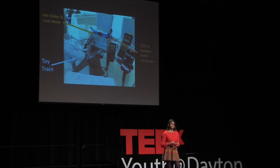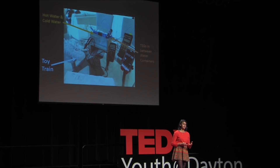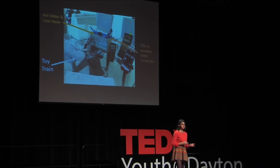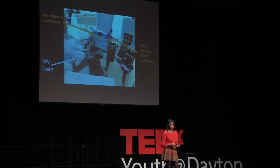I was able to power this train for about 40 minutes. This was a huge step in my process toward my end goal, because it meant I was able to power a train — which originally requires three AAA batteries — with common resources such as hot water and cold water. After completing this experiment, I was still interested in investigating other heat sources that people without direct access to electricity would have access to.